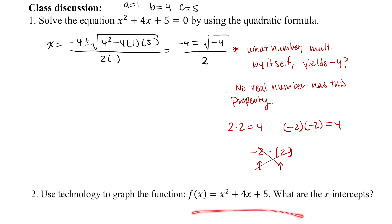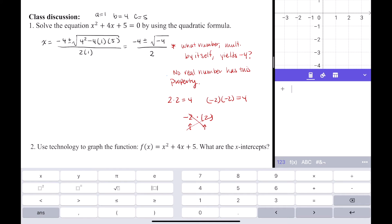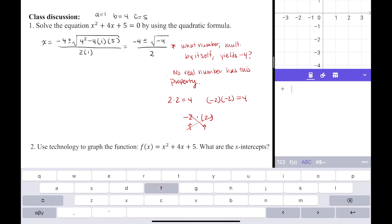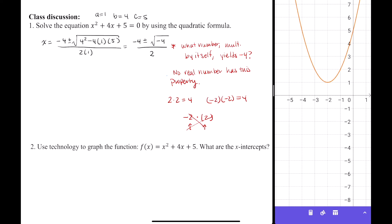So let's use technology. As you can see, I have GeoGebra up, and now I'm going to graph f of x again. So I type in f and then parentheses x equals x squared plus 4x plus 5, and then hit return. And now I get a picture of what's going on, a better picture of what's going on.